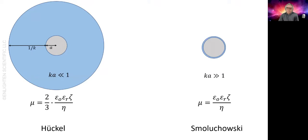The other extreme is a very thin double layer, and the Smoluchowski equation is used. It's similar to the Huckel equation, but without the factor of two-thirds. Intuitively that makes sense. You don't have the large cloud of ions slowing the particle. So for a given electric field and zeta potential, the particle will move faster.